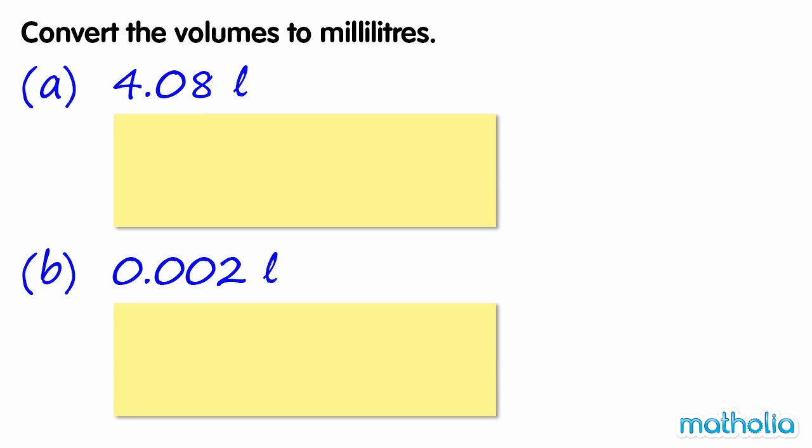Convert the volumes to millilitres. A: 4.08 litres. We need to multiply by 1000. Let's do this by shifting the decimal point three places to the right.